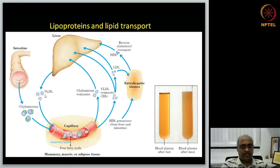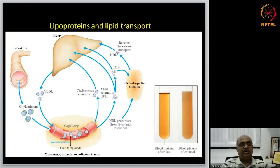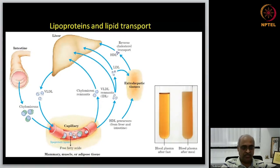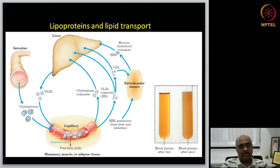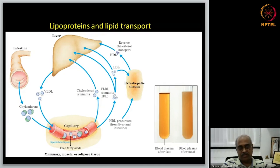We start with chylomicrons and VLDL. Chylomicrons transport dietary lipids to other tissues - they circulate in the blood and activate lipase, and the free fatty acids produced are taken up by tissues either for beta-oxidation in muscles or for storage by converting back into triacylglycerol in adipose tissues. After cargo delivery, the remnants of chylomicrons go back to the liver.